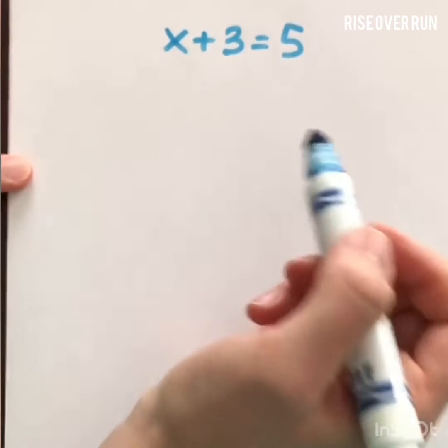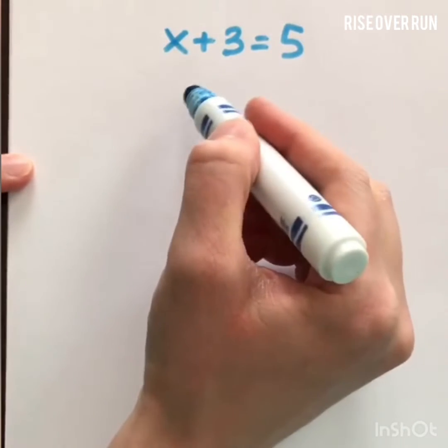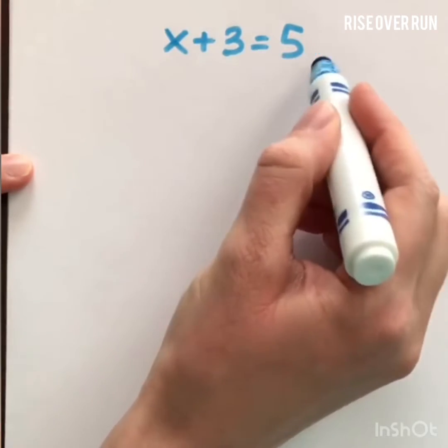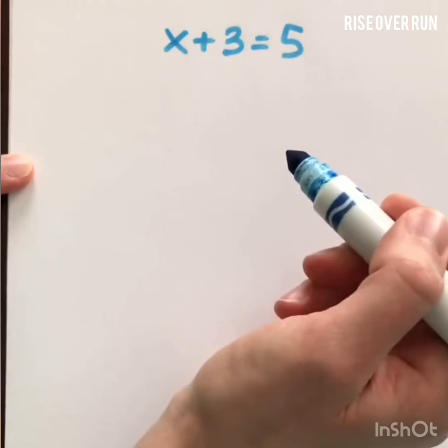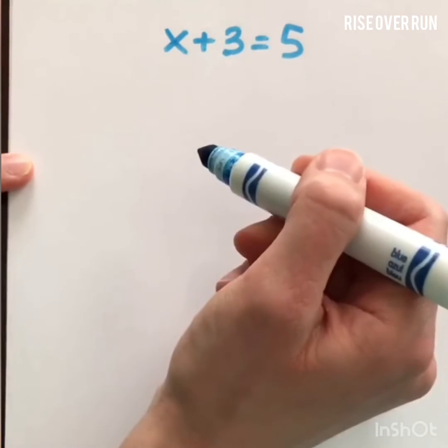Today, let's talk about how to solve equations. So what is an equation? An equation is two expressions set equal to each other. X plus 3 is an expression, and 5 is an expression, and because that equal sign is there in the middle, it makes it an equation.